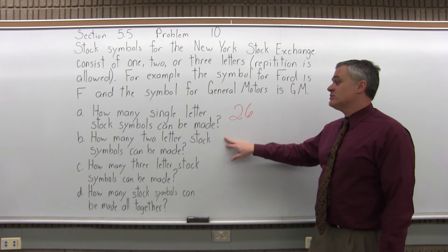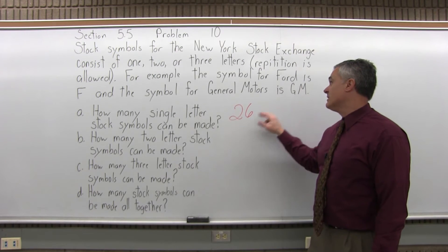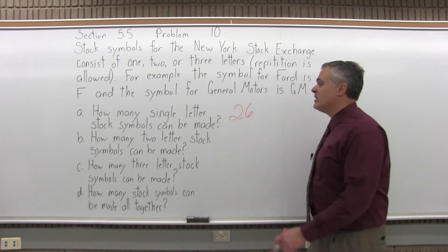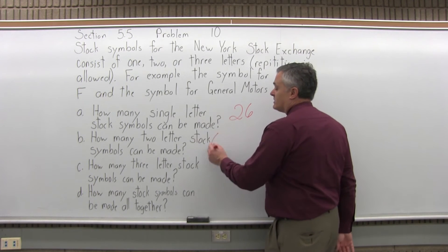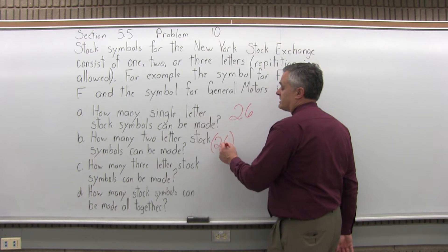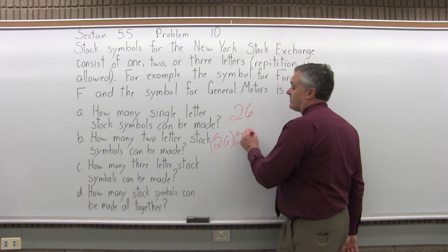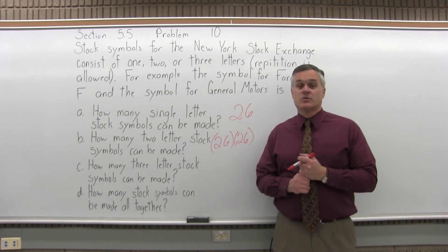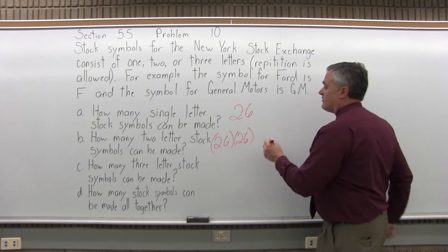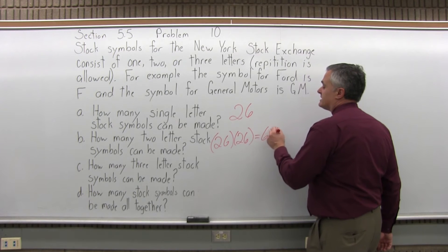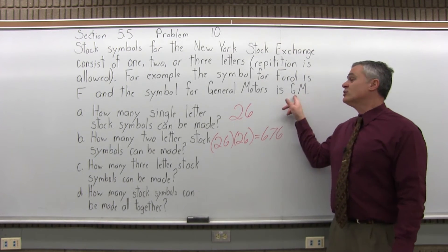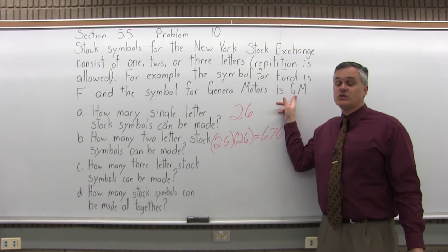How many two-letter stock symbols can be made? Two letters, like GM for General Motors. Again, repetition is allowed. So this is basically a two-step process. Step 1 to choose the first letter, and step 2 to choose the second letter. And since I can have repetition, there's 26 letters in the alphabet, so 26 choices for each step. And if you multiply 26 times 26, it's 676. There are 676 different two-letter stock symbols that you can make, like GM.